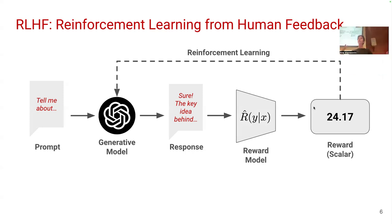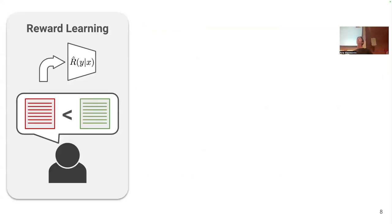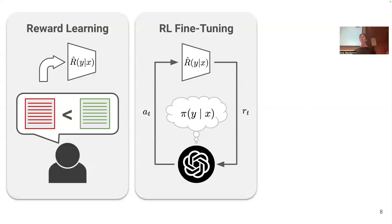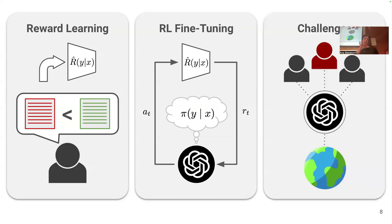We are going to break down this lecture into two or three parts. First, we'll learn how to actually train a model to give us rewards — how do we go from a model's response to another model telling us this is good or bad. Then we'll see how to fine-tune the language model with this information. Finally, if time permits, we'll talk about some challenges in this space.